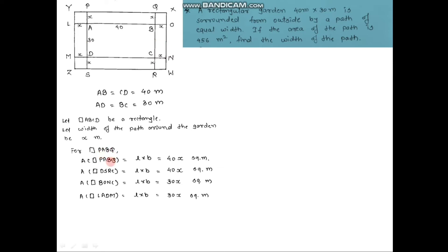Consider quadrilateral PABQ. As it is a rectangle, we can find its area by the formula length into breadth. For quadrilateral PABQ, the length is 40 and the breadth is x, so we have area = 40 × x = 40x square meters. Similarly, the area of quadrilateral DSRC also has length 40 and breadth x, so its area is also 40x square meters.